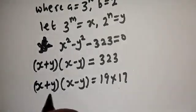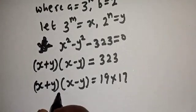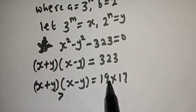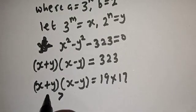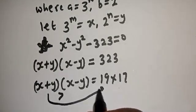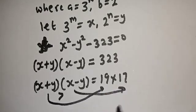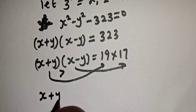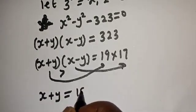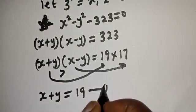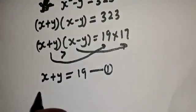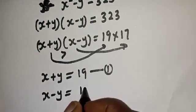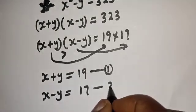From here, s plus y is greater than s minus y, and 19 is greater than 17. Therefore, we assign s plus y equal to 19 — let's call this equation 1 — and s minus y equal to 17 — let's call this equation 2.